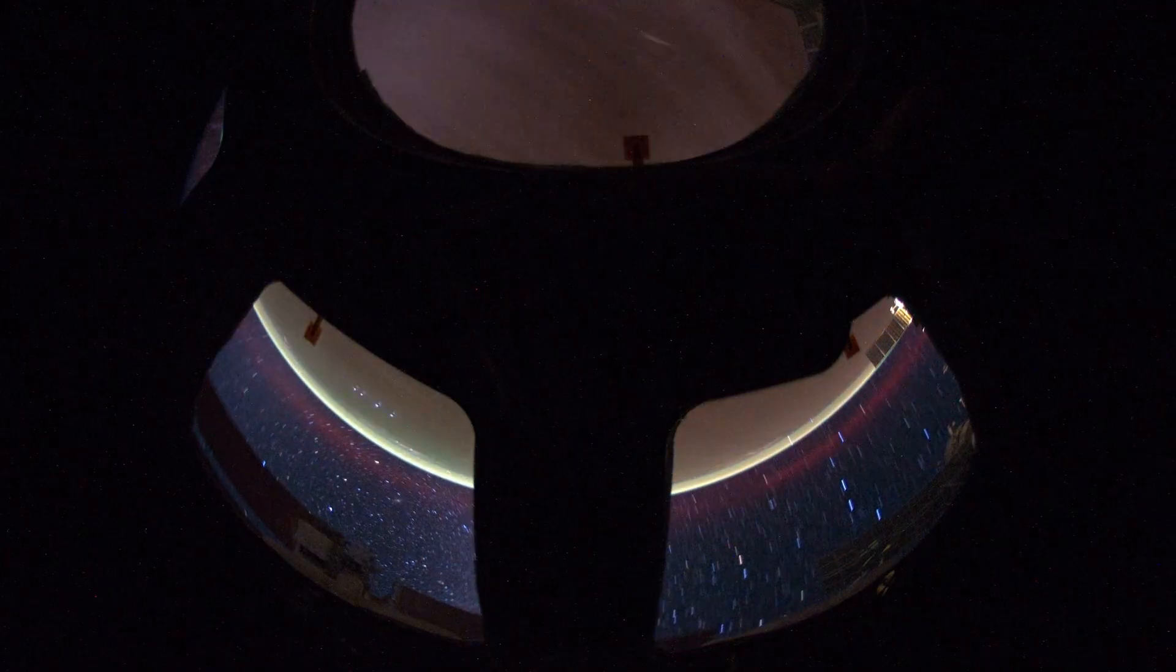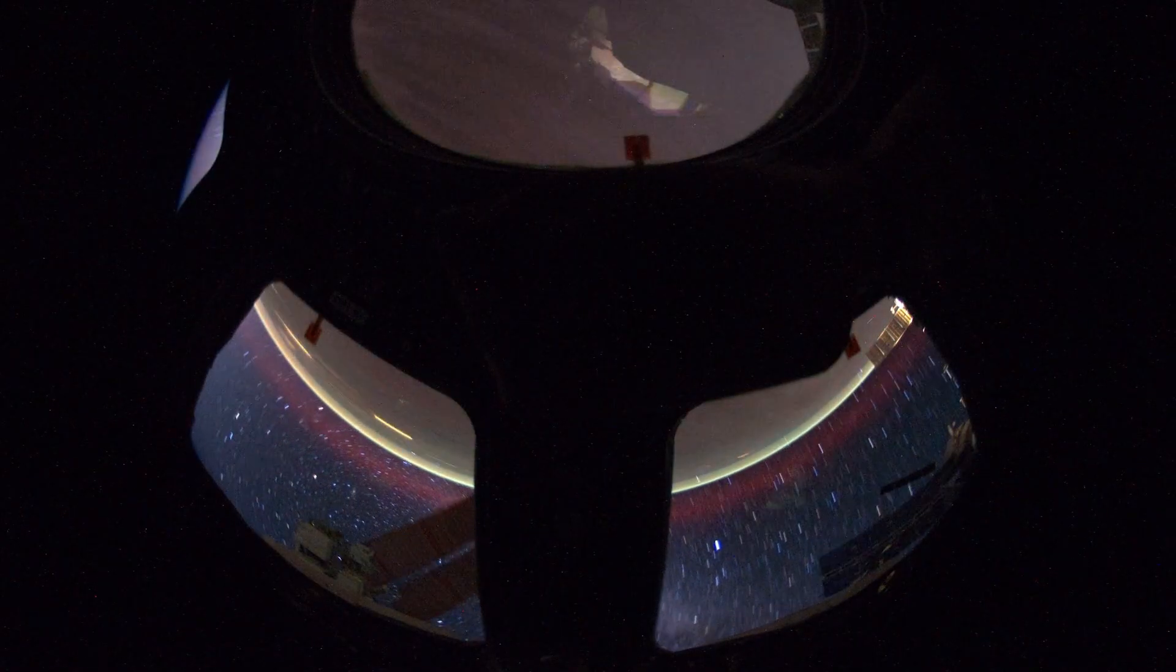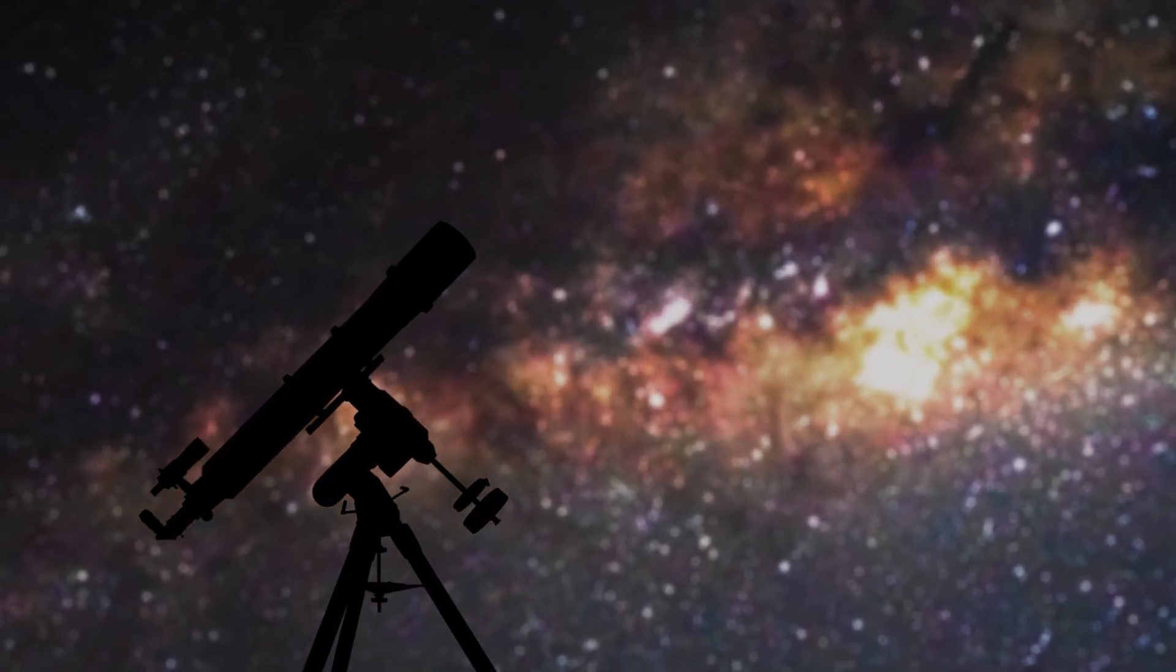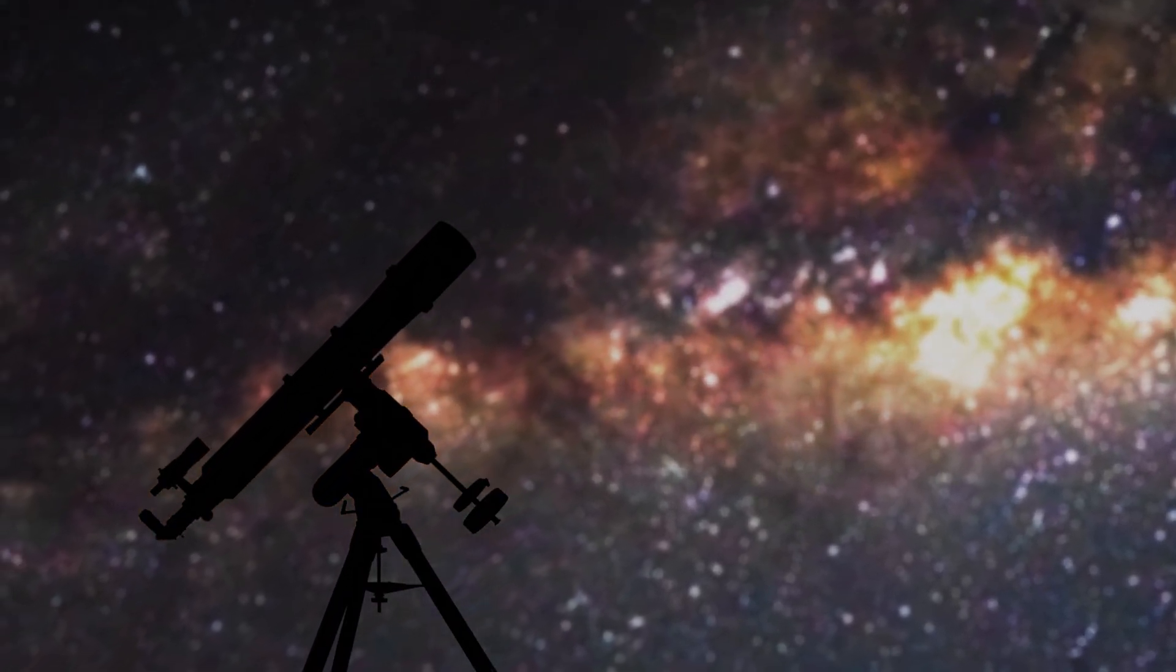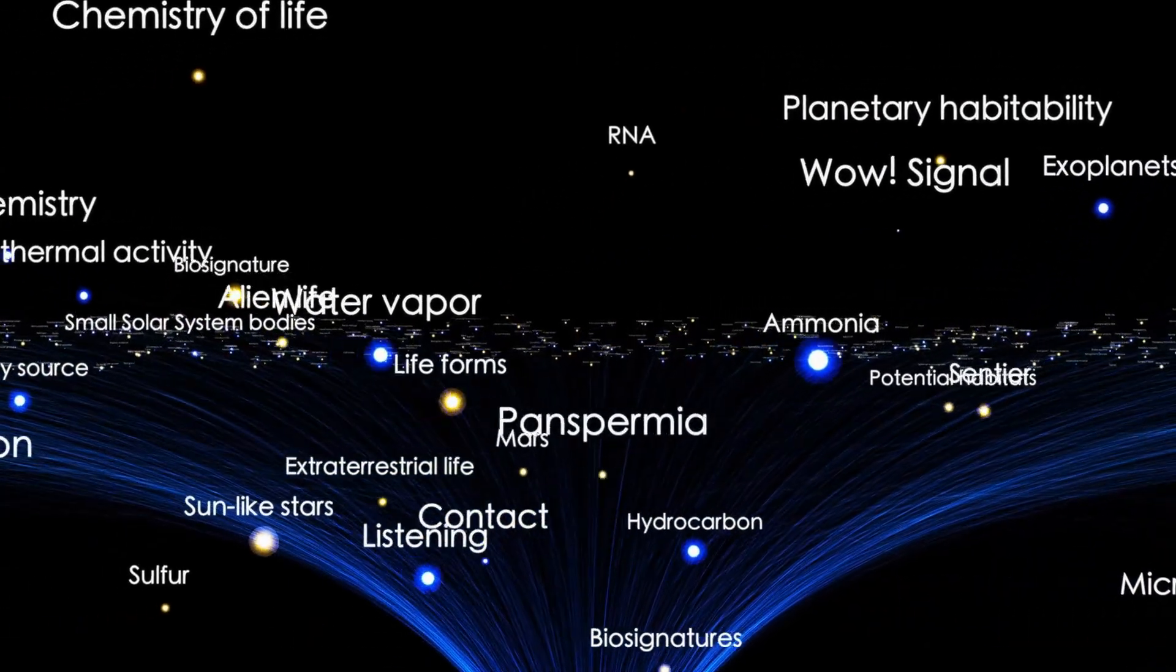On top of that, Proxima Centauri is known for its solar flares and intense radiation, which would constantly bombard Proxima b's atmosphere, adding another layer of hostility. So while Proxima b offers some tantalizing possibilities, it's far from an easy place for life to thrive.